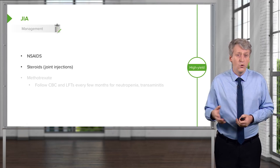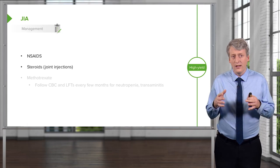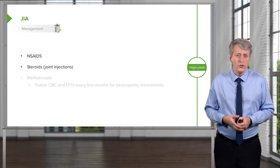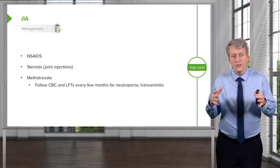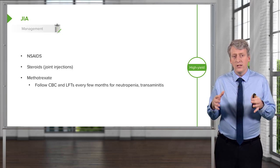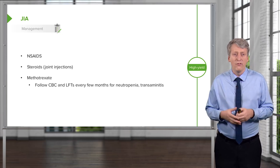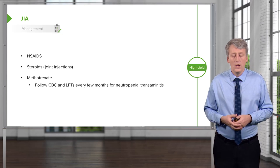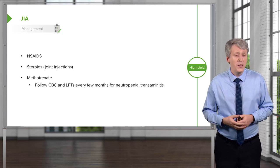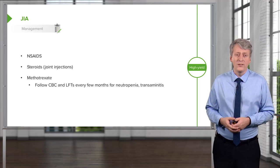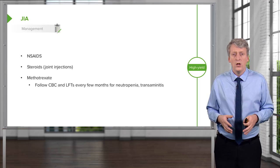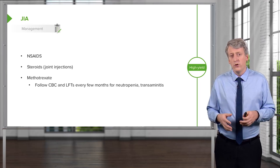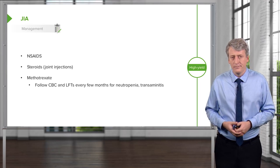Lastly, if joint injections and NSAIDs aren't doing the trick, we may put these children on systemic significant anti-inflammatories like methotrexate. Remember, if a patient is on methotrexate, you need to follow their CBC and their LFTs every few months to watch for neutropenia and transaminitis.